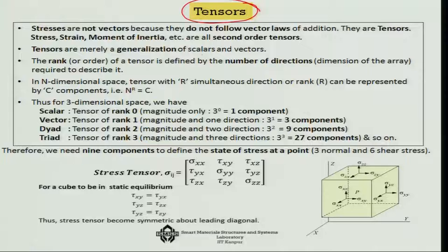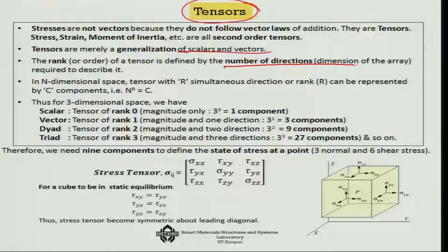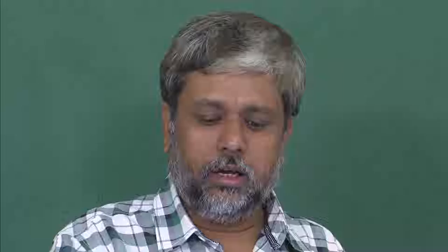Tensors are a generalization of scalars and vectors. Now, how do we define the tensor for stresses and strain? We can also show that scalars and vectors are special cases of tensors of certain ranks. The rank of a tensor is defined by the number of directions or dimension of the array required to describe it. Suppose we are talking of an n-dimensional space and a tensor with rank r; then it can be represented by c components such that n to the power r equals c.